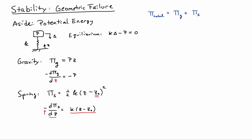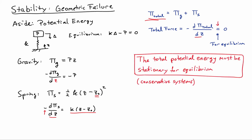The total potential of the system is the sum of the gravitational potential and the spring potential. The total force acting is minus the derivative of pi-total with respect to z, and this must equal zero for equilibrium. So equilibrium can be re-expressed simply as requiring the total potential energy to be stationary — its derivative needs to equal zero. This notion of stationary potential energy always holds for conservative systems, and it's the first step to understanding stability of a mechanical system.